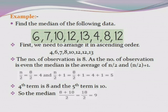Since the number of observations is even, the median is the average of the (n/2)th and (n/2 + 1)th terms. Here n/2 = 8/2 = 4 and n/2 + 1 = 5. The 4th term is 8 and the 5th term is 10. So the median = (8 + 10) / 2 = 18 / 2 = 9. The median of the given data is 9.